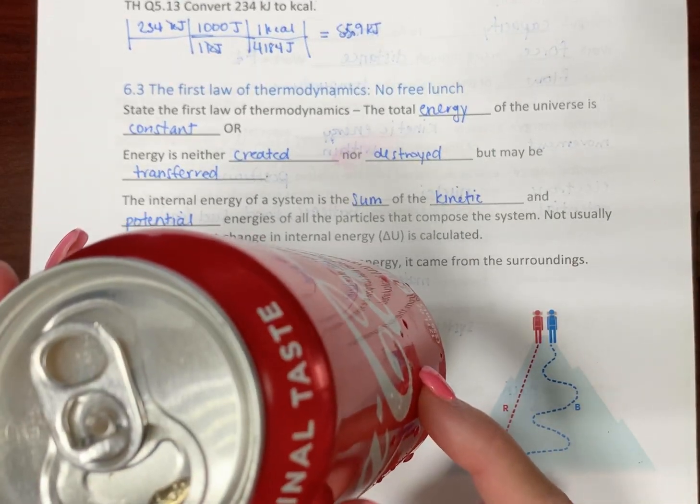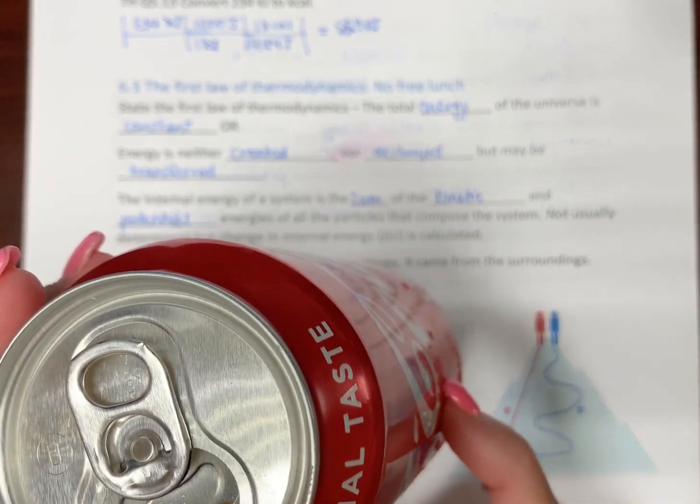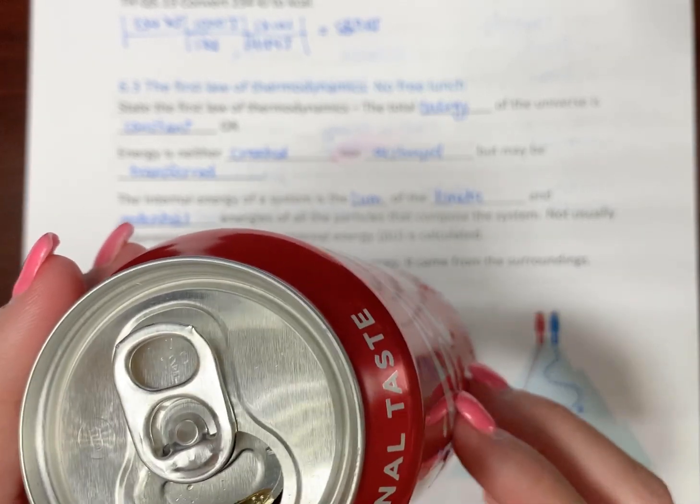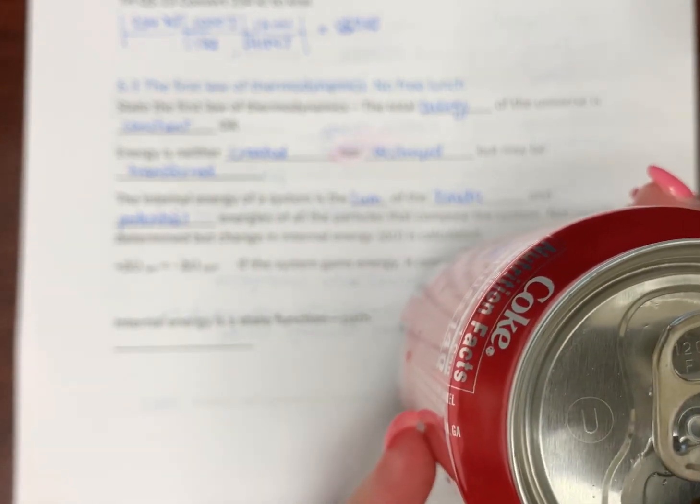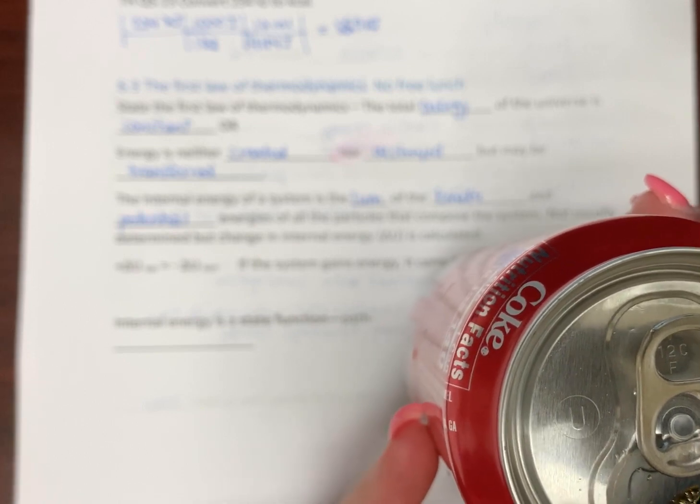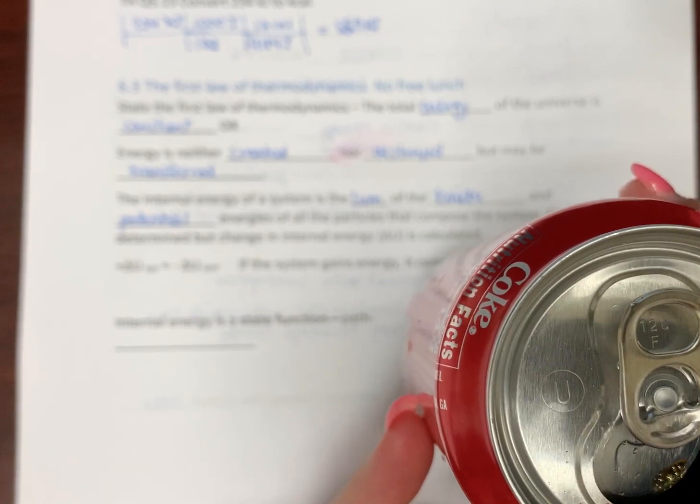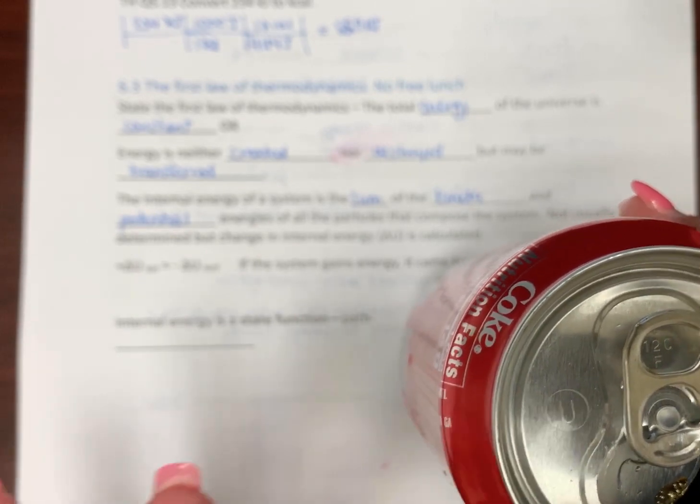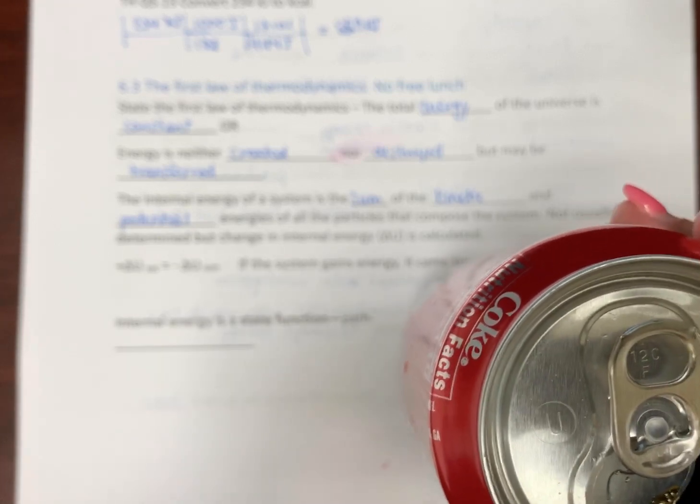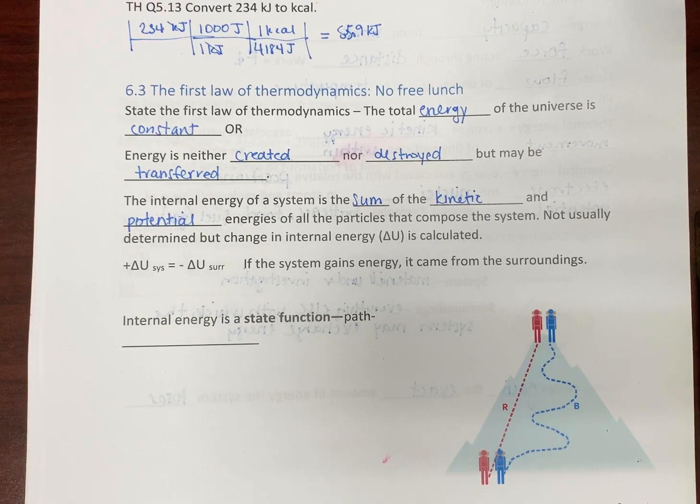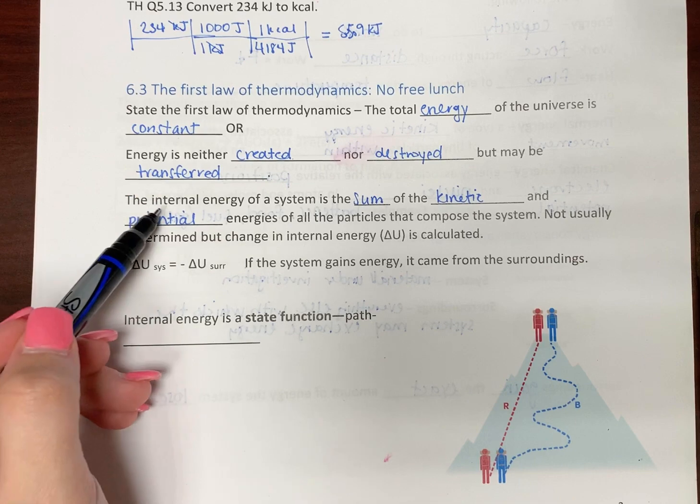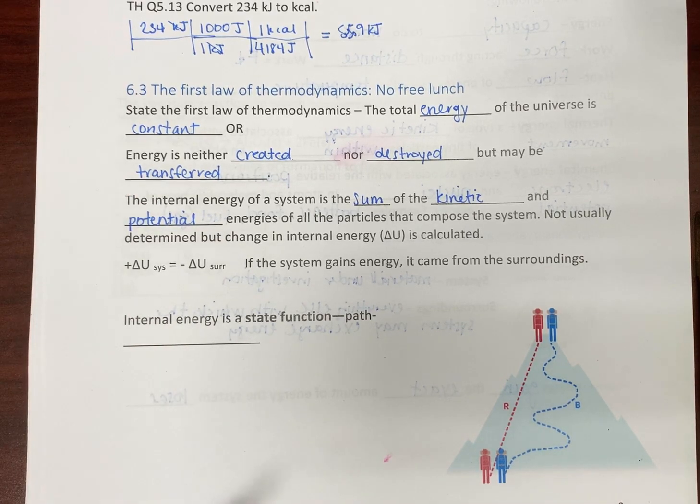So, the can's made of stuff. It's made of aluminum. And so, this is solid, and so those particles are vibrating. So, they have a little bit of kinetic energy. You have the actual liquid, which is a fuel, so that's stored energy, as far as the Coke. And then, you actually have gas particles, the carbonation, which is escaping. So, that's also some form of kinetic energy. So, all of that has to do with the can of Coke, and all that added up together is the total internal energy of my system.